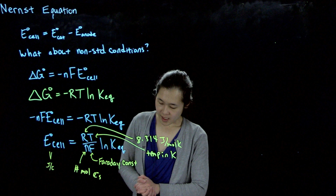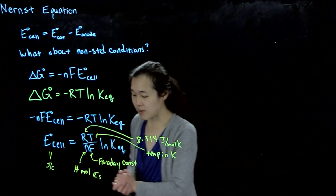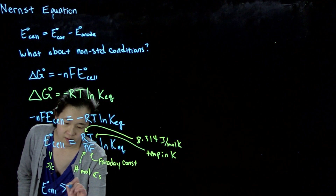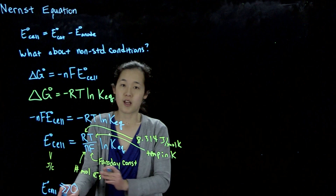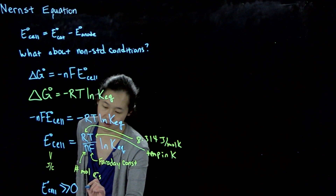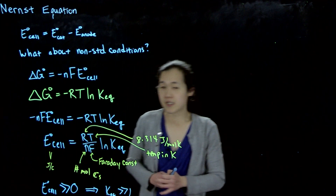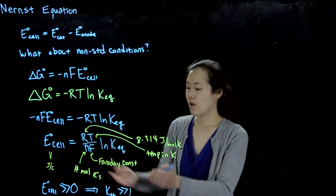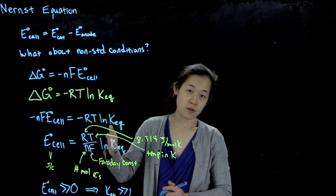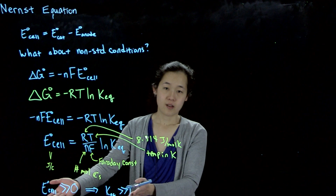What this also means is that if we know our standard cell potential, we can know how likely this reaction is going to proceed. If our cell potential is greater than zero — very positive — then based on free energy, the free energy would be very negative, so the reaction would be spontaneous. This also implies that the equilibrium constant K would be greater than 1, meaning the reaction proceeds forward toward products. On the other hand, if cell potential equals zero, the reaction will not proceed in either direction.